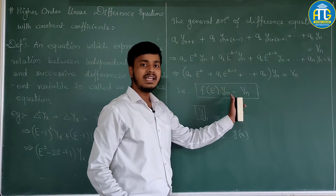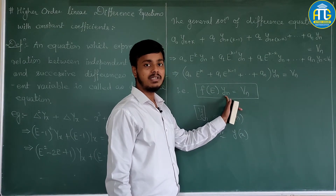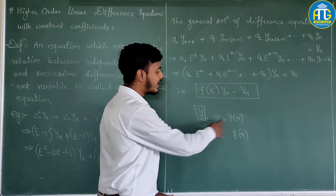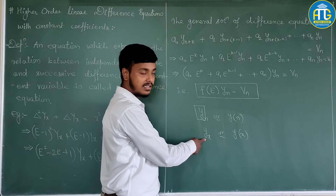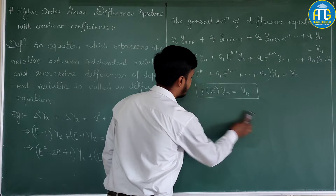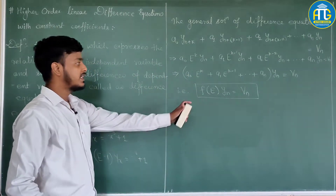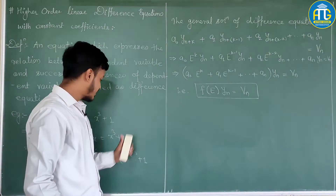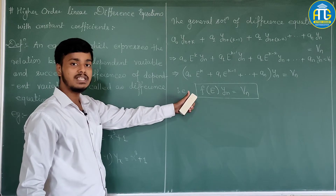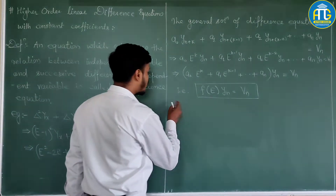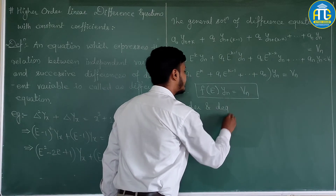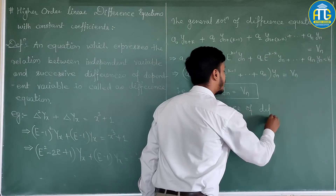We write it as y(n) because the argument y takes only integer values — that is why we write y(n) and not y of a continuous variable. This is all about the definition and example of difference equations. Now let us move on to the order and degree of difference equations.